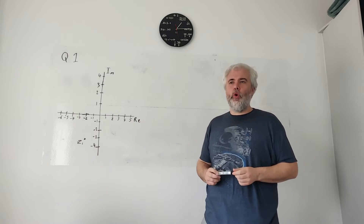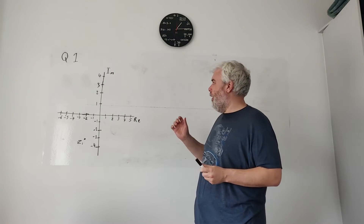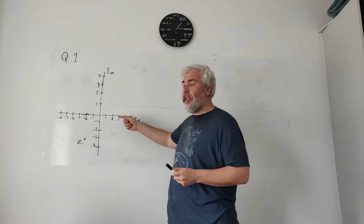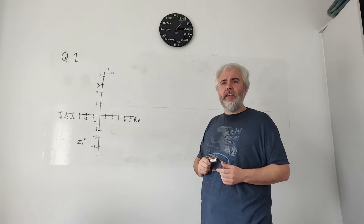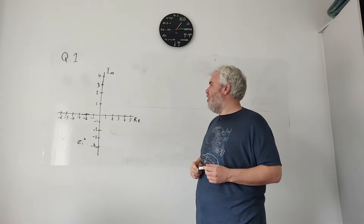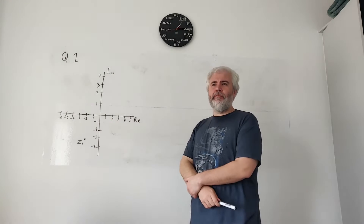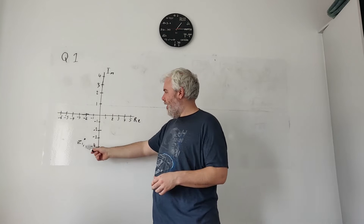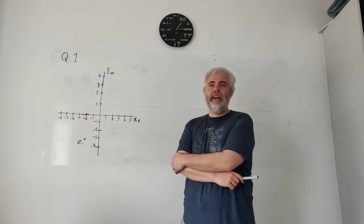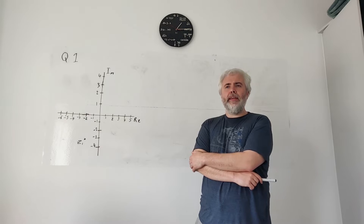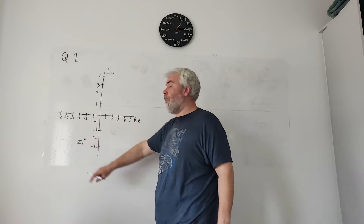This is question one and it's all about complex numbers, which are a number made up of both a real part and an imaginary part. They give us the Argand diagram first and it has a number already on it — a dot — and that's Z1. Part A1 asks us to write down the number for Z1.